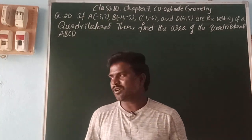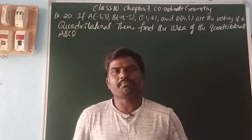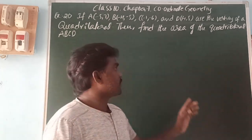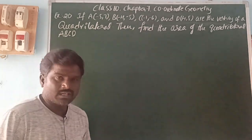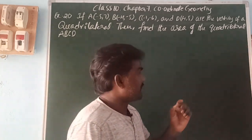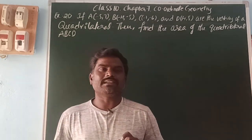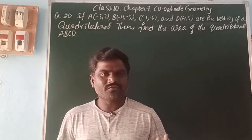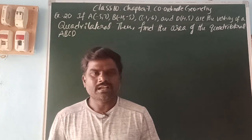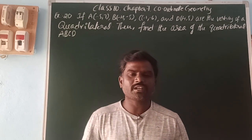A quadrilateral is a simple closed curve or a polygon which has four sides. To find the area of the quadrilateral, you join a line between opposite vertices — that line is called a diagonal. When you draw the diagonal of a quadrilateral, it divides into two triangles. So the area of the quadrilateral equals the sum of the areas of the two triangles.